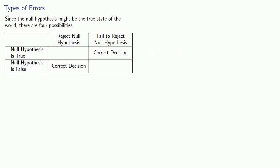On the other hand, we might make the wrong decision. There are two possibilities. The null hypothesis is true, but we rejected it anyway, and this is what's called a type 1 error.